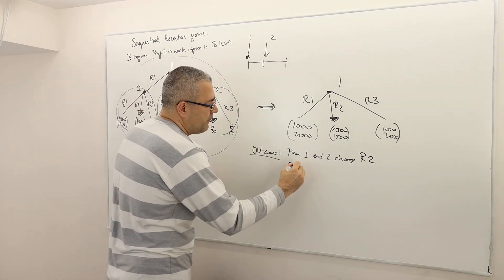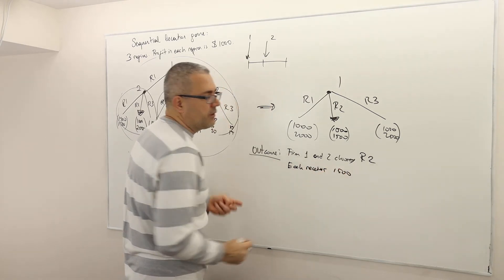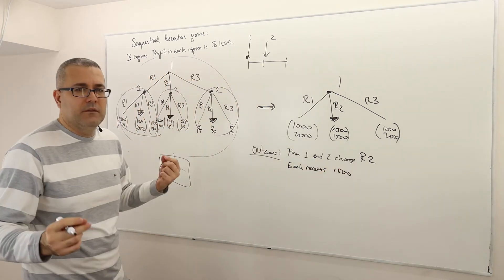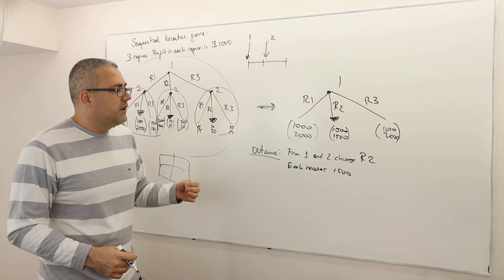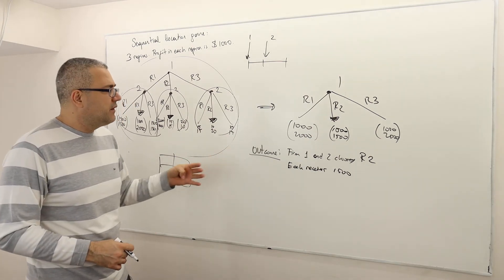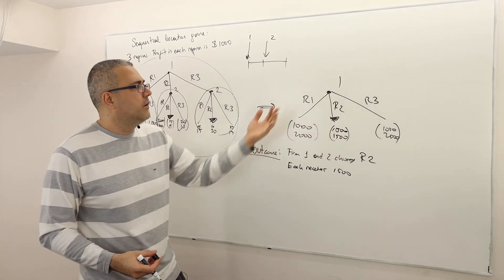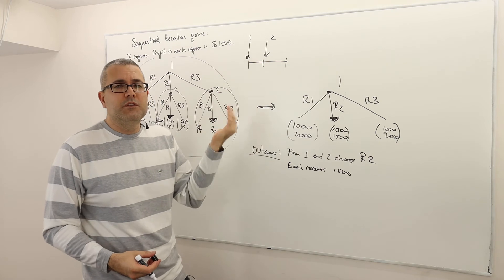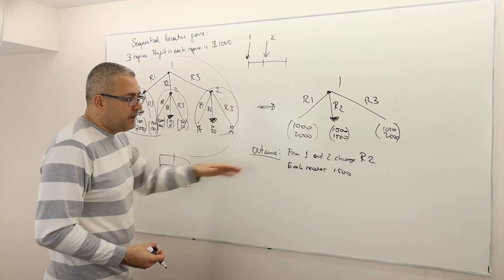And this is the second way of describing outcome. They receive, each receives 1,500 net profit. So this is outcome. Why? Well, because this is not strategy, because the strategy has to tell me, for example, what firm two is going to do if firm one, for example, chooses something different than R2.